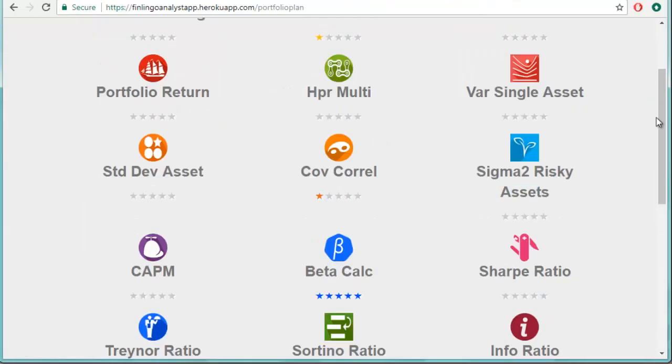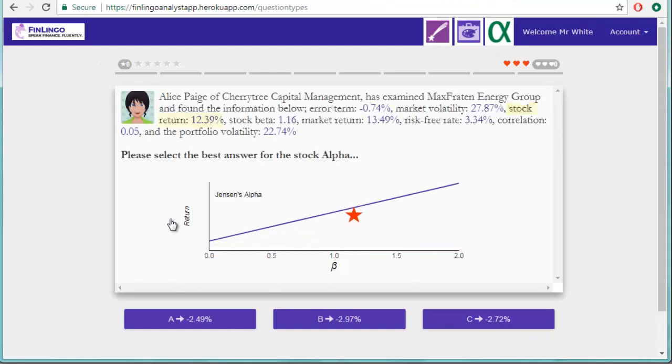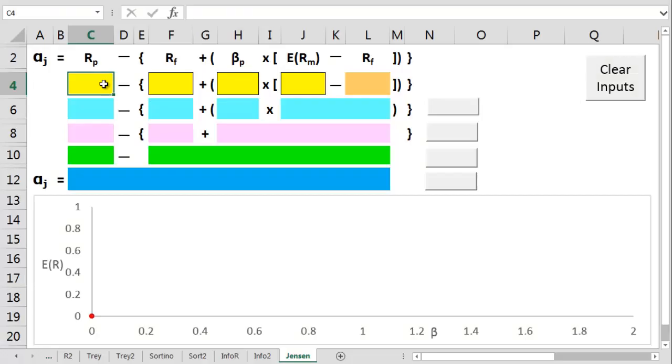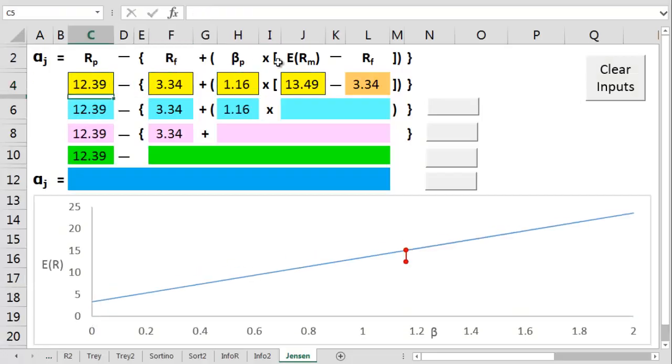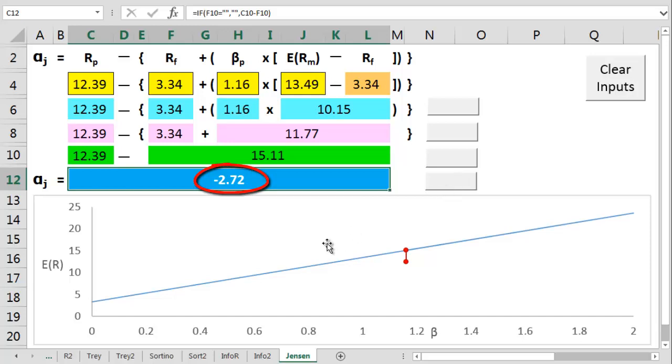So let's try a question then on Finlingo. We've got an actual return of 12.39%, a risk-free rate of 3.34%, a stock beta of 1.16%, and the expected market return of 13.49%. Let's move those numbers across to the spreadsheet. So we take off the risk-free rate, multiply by beta, add on the risk-free rate again, then take away from the actual return. We've now got an alpha of minus 2.72%, which is a negative alpha, so maybe we'd short this stock.